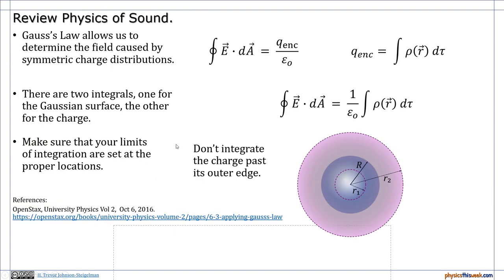Okay, so just as a quick review, Gauss's law allows us to determine the field caused by spherically symmetric charge distributions. We can use Gauss's law and this equation to figure out the amount of charge that's enclosed. When we put those two together, we've got integrations on both sides, one over the area, one over the volume. When you apply these, make sure that you set your limits of integration at the proper locations. You don't want to integrate past the outer edge of your charge. Okay, you'll see lots of different problems like this where the value of rho changes, this function will change. Just make sure that you follow the proper rules for integration when you apply those.